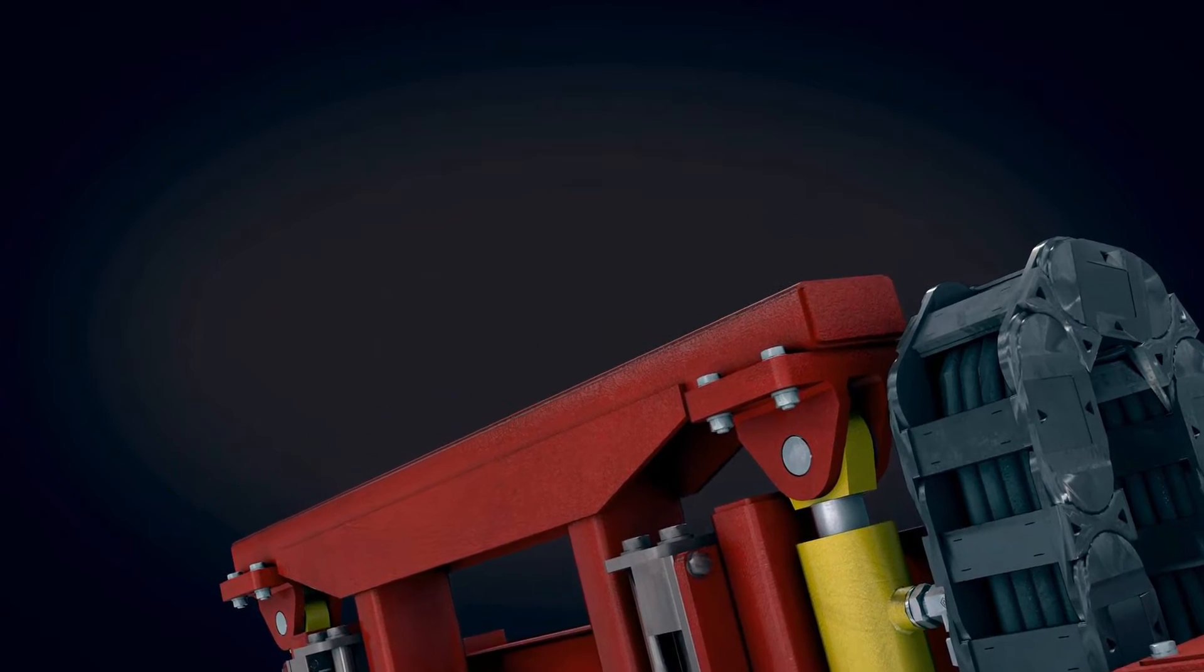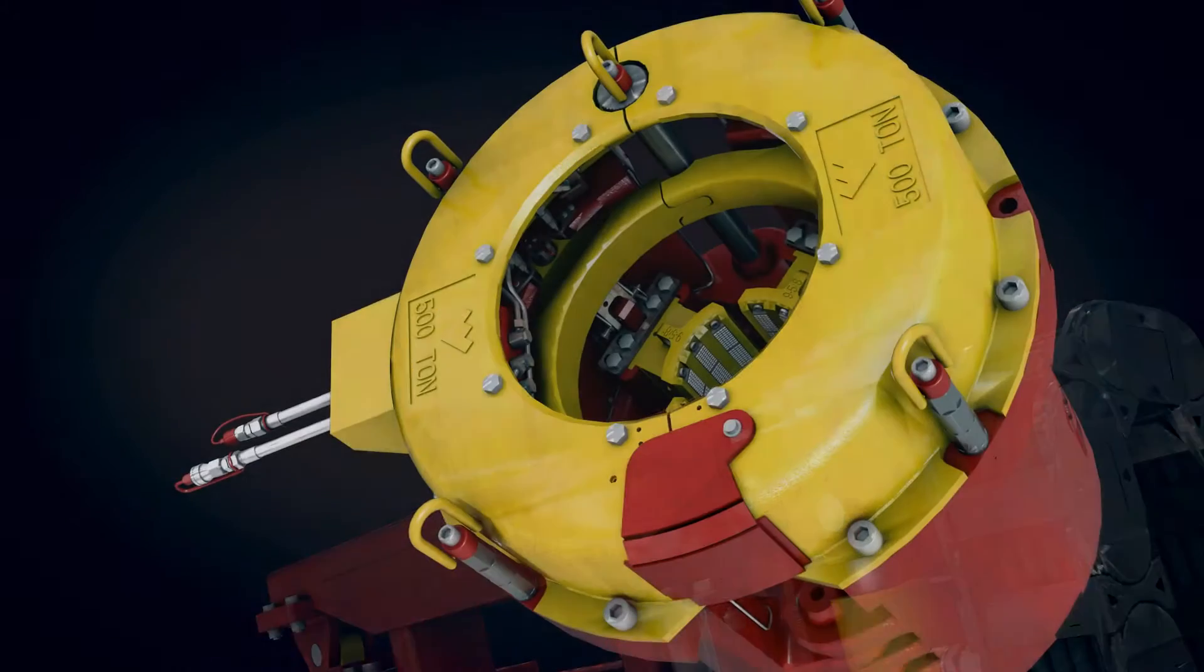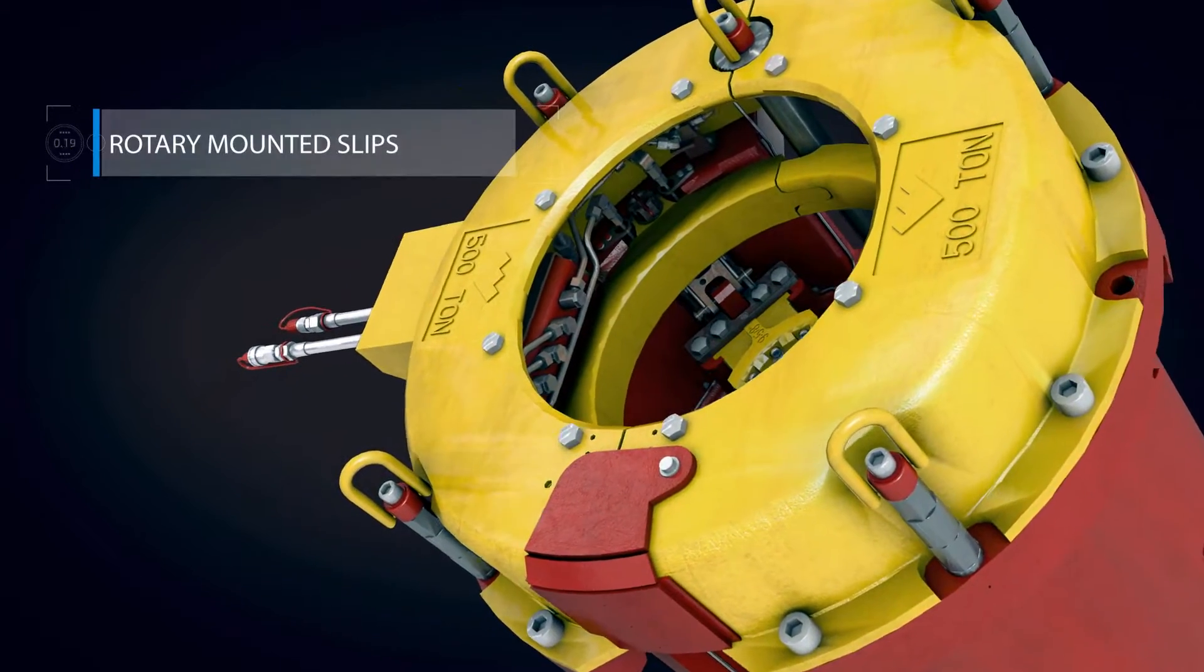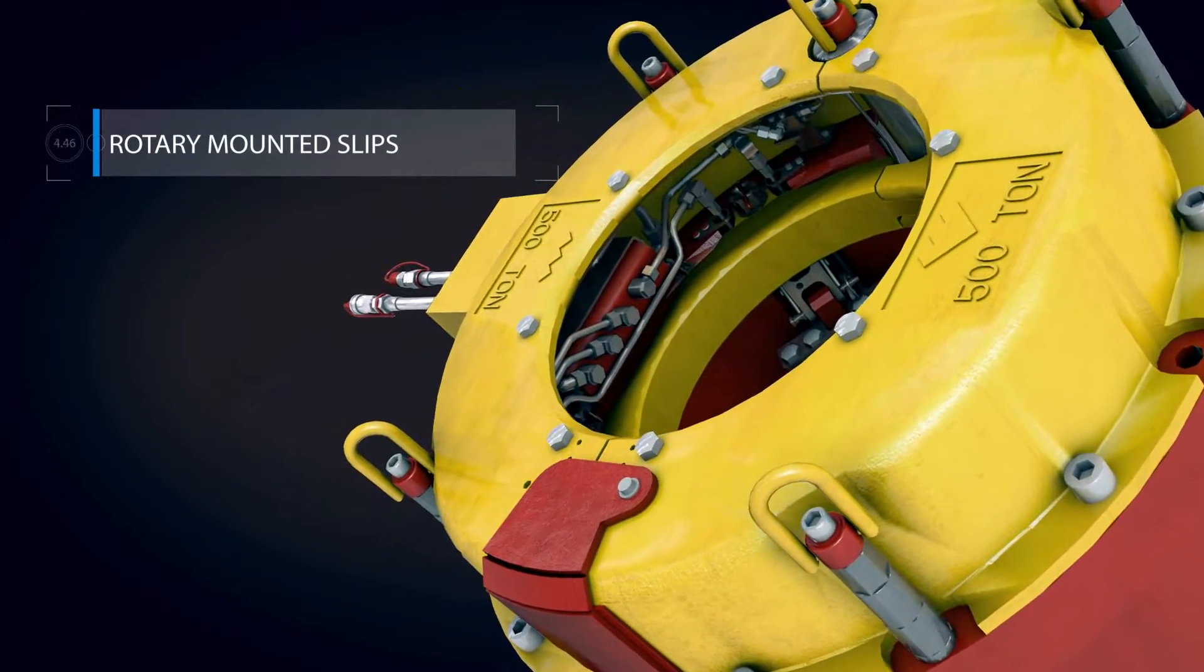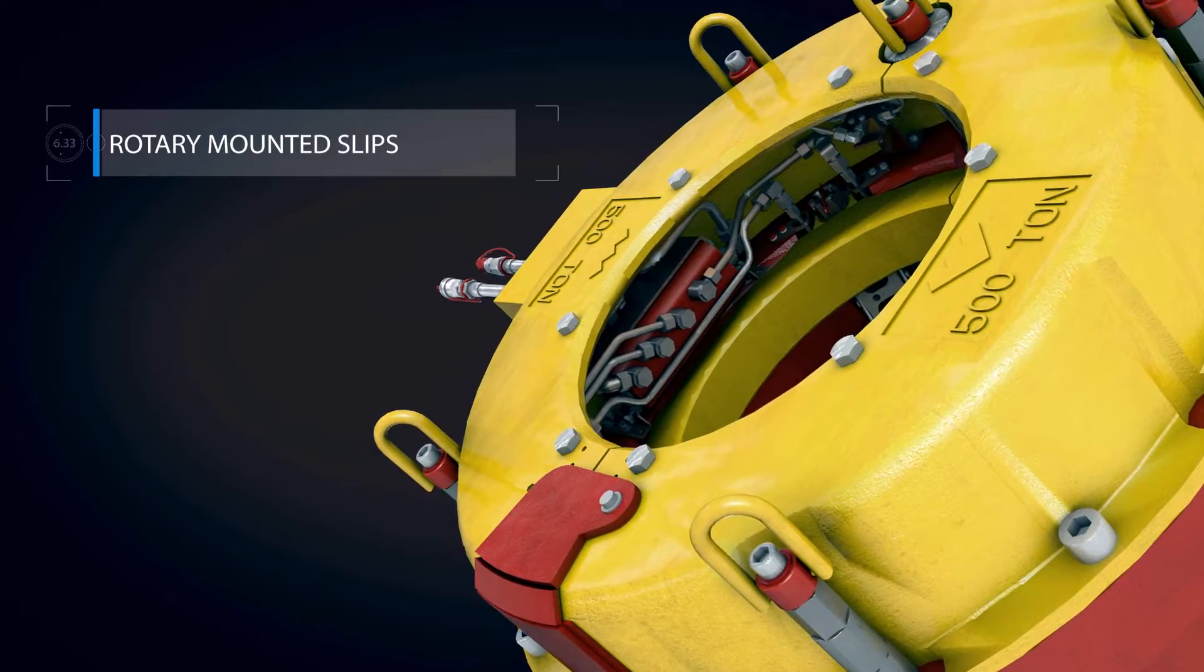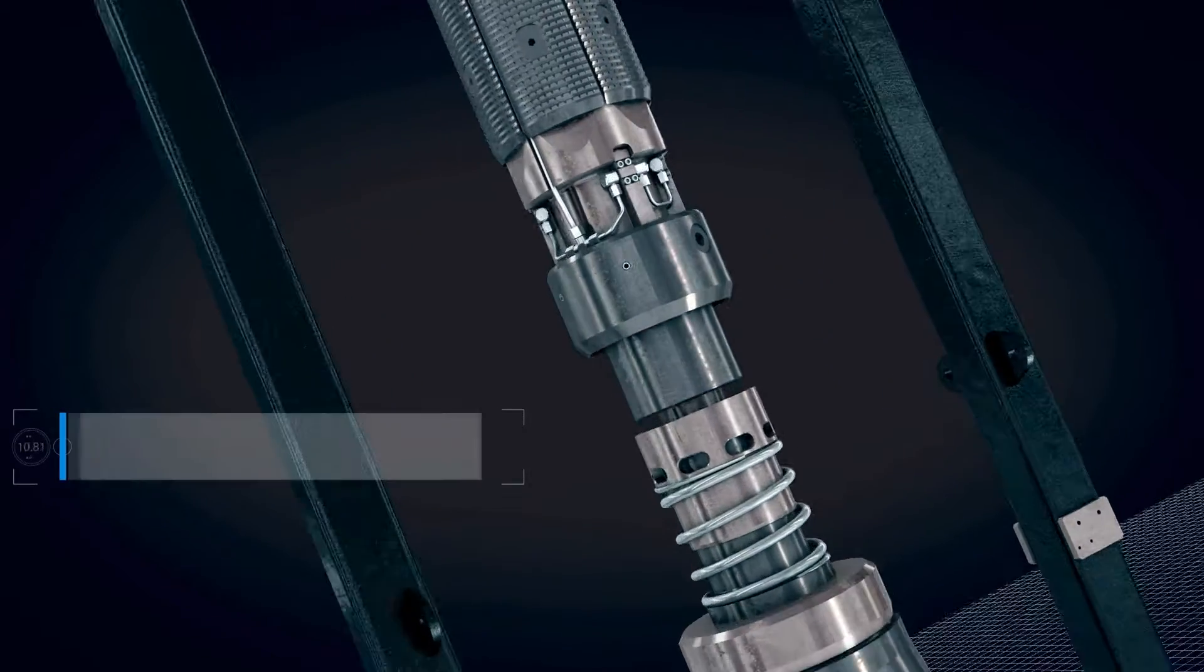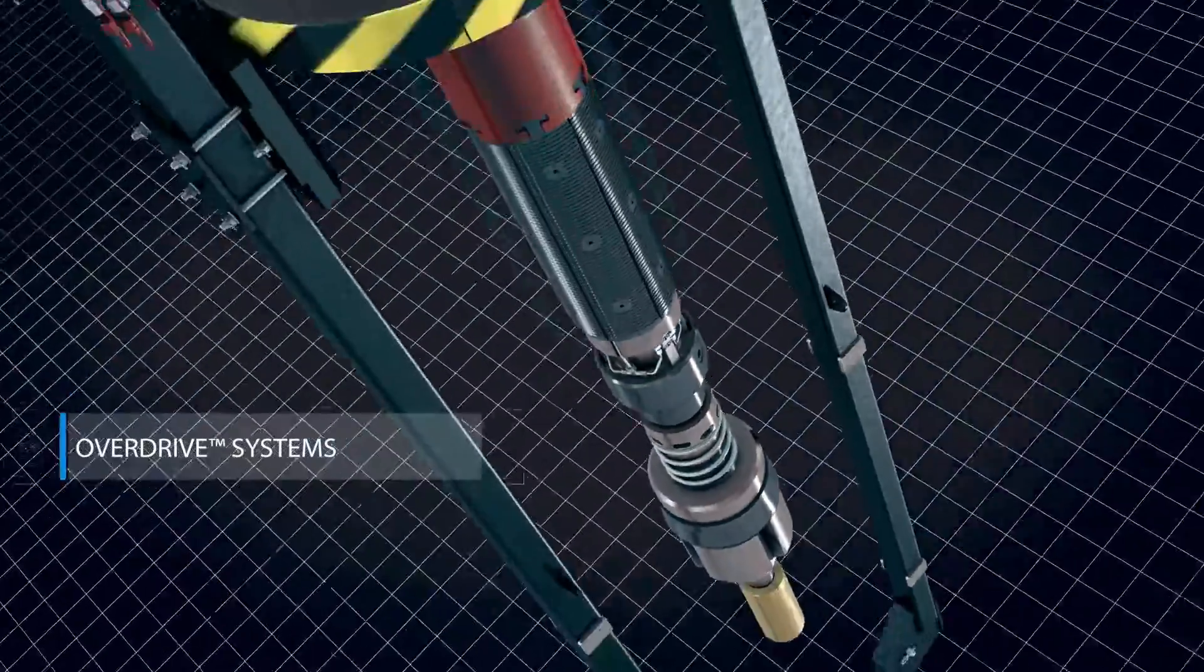Combined with the Weatherford Integrated Safety Interlock System, the RMS 2000 ensures positive gripping of the string, virtually eliminating dropped casing strings. Used in conjunction with the Weatherford Overdrive System, casing installation is safer and more efficient.